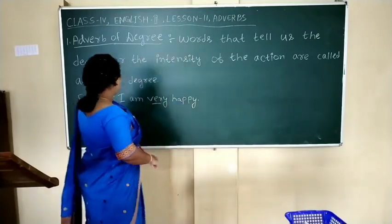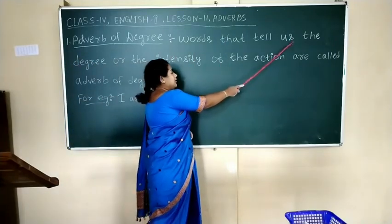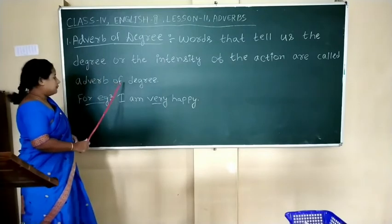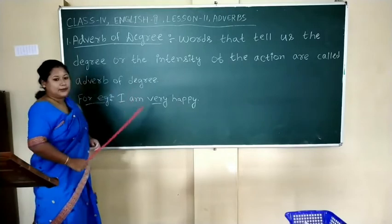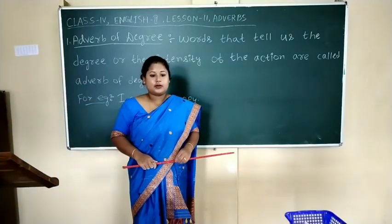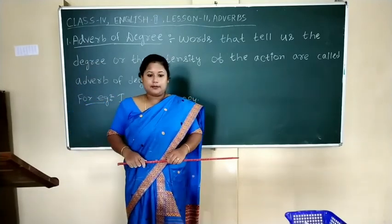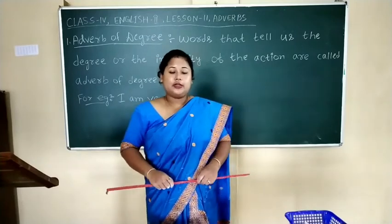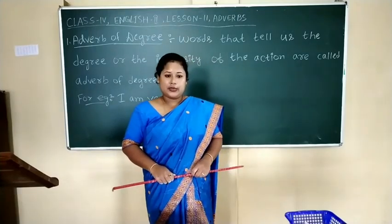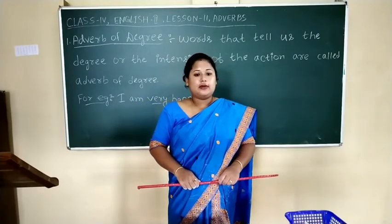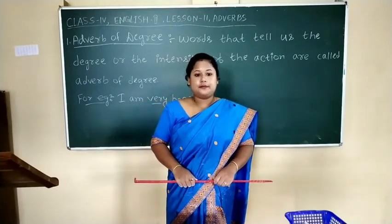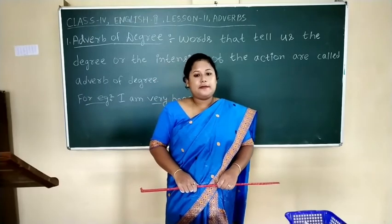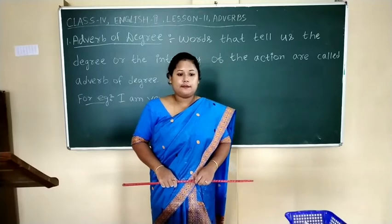The next adverb to be discussed is adverb of degree. Words that tell us the degree or intensity of the action are called adverbs of degree. For example, I am very happy. In this sentence, very is an adverb because it tells us to what extent he was happy. Adverbs of degree answer the question how far or how much. Somewhat, very, really, extremely, and absolutely are adverbs of degree. Adverbs of degree occur before an adjective or an adverb.